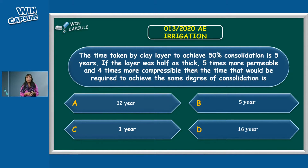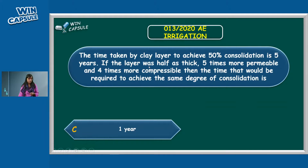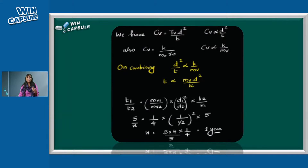When permeability increases and layer is thinner, consolidation happens in less time — so the answer should be less than 5 years. The correct answer is 1 year. Using the Cv equation: Cv = Tv × d² / T, meaning Cv is proportional to d²/T. Also Cv = k/mv. Therefore T is proportional to d² × mv / k. Setting up T₁/T₂ with the given changes: d becomes d/2, k becomes 5k, mv becomes 4mv.